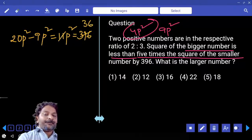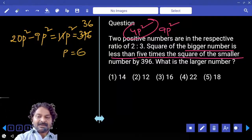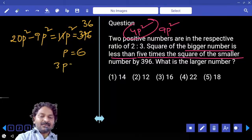11p² = 396, so p² = 36, so p is 6. Now what is the larger number? Larger number is 3p, which is 18.